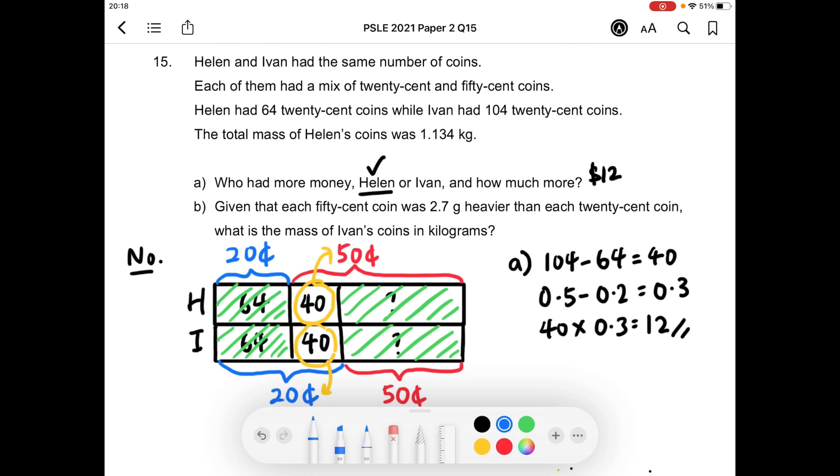Alternatively, you can just take 40 times 50 cents, take away 40 times 20 cents, to find out the difference in the amount of money they had.